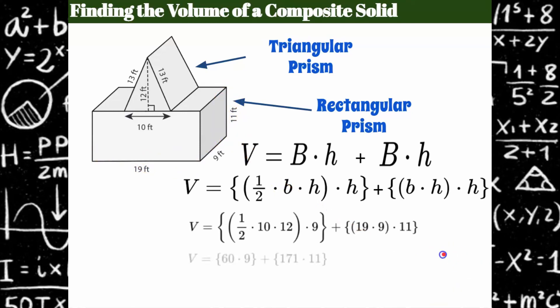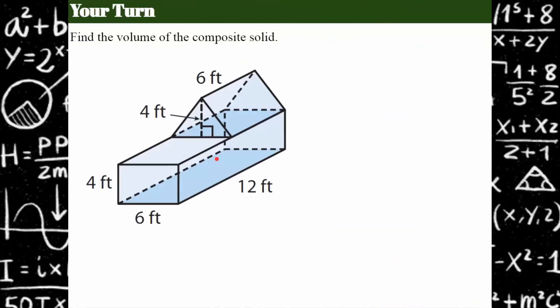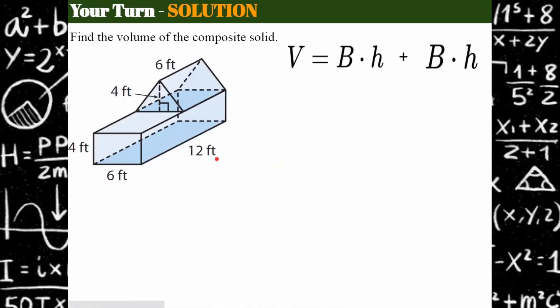When you do all the math you get 540 for the triangular prism and 1,881 for the rectangular prism, for a total composite solid volume of 2,421 cubic feet. Your turn — find the volume of this composite solid and come back when you're ready to check your work. Welcome back.